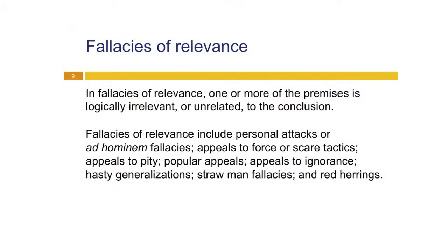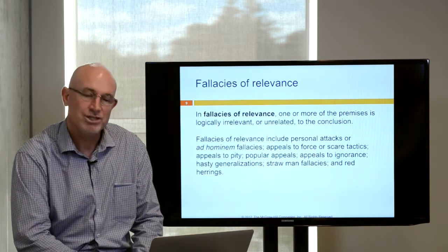Fallacies of relevance occur when one or more of the premises is logically irrelevant or unrelated to the conclusion. Fallacies of relevance include personal attacks or ad hominem fallacies, appeals to force or scare tactics, appeals to pity, popular appeals, appeals to ignorance, hasty generalizations, straw man fallacies, and red herrings. These are all constructs used to divert us from the actual issue.